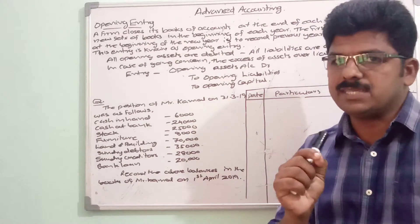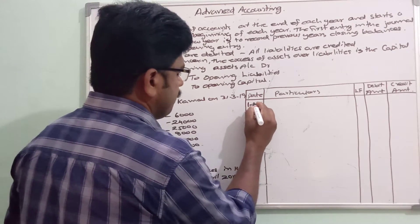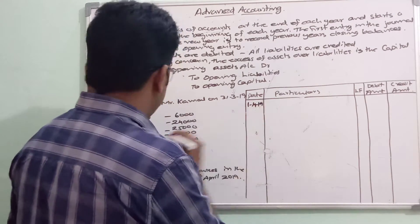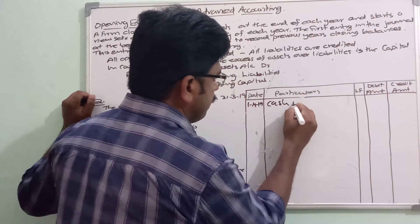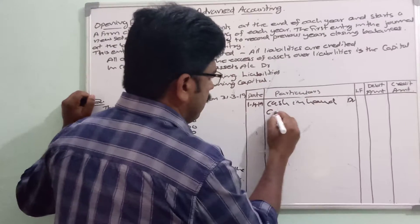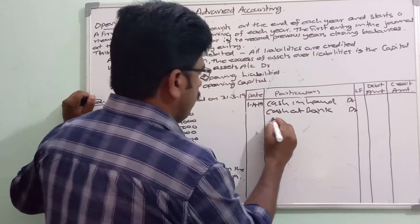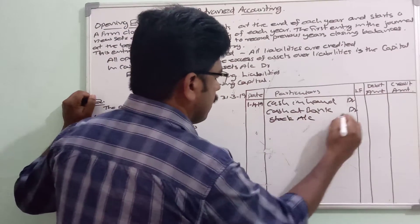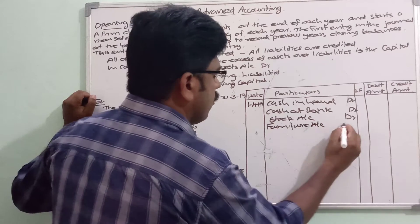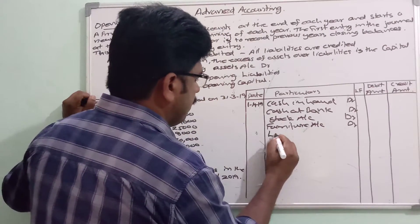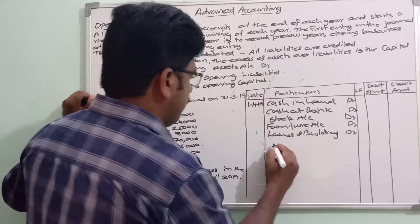Let us see how these transactions are recorded as opening entry. On 1st April 2019, all opening assets accounts are to be debited: cash in hand account debited, cash in bank account debited, stock account debited, furniture account debited, land and building account debited, sundry debtors account debited.